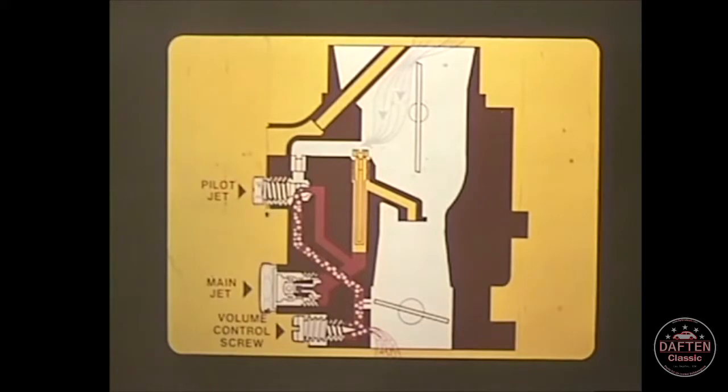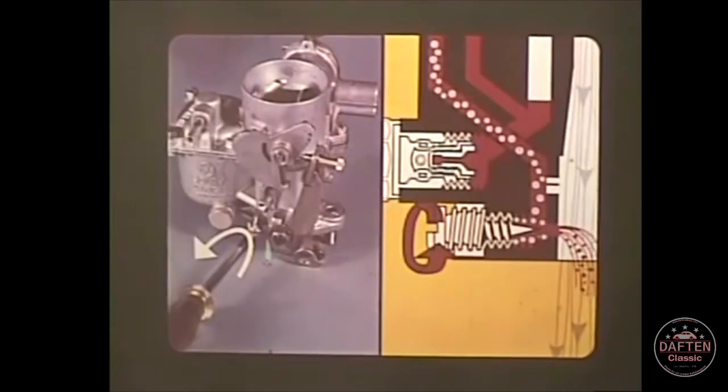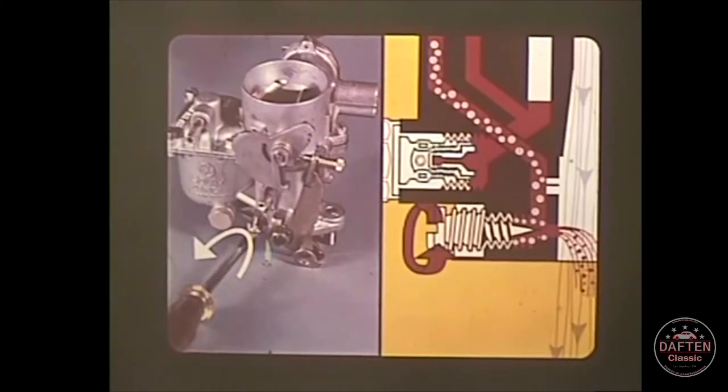And this mixture travels to the volume control screw where the amount or volume of this mixture is controlled before being allowed to be drawn into the engine. Turning the volume control screw inward closes the passage and reduces the amount of idle fuel air mixture. And turning the volume control screw out opens the passage and allows a greater volume of idle fuel air mixture to travel to the engine.